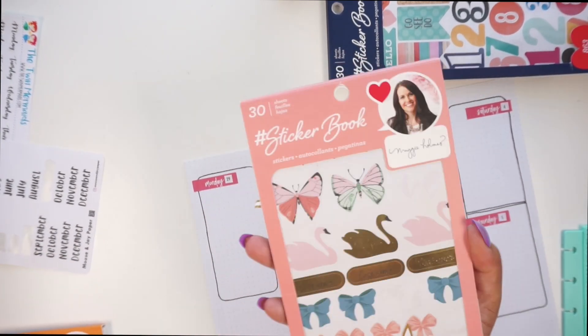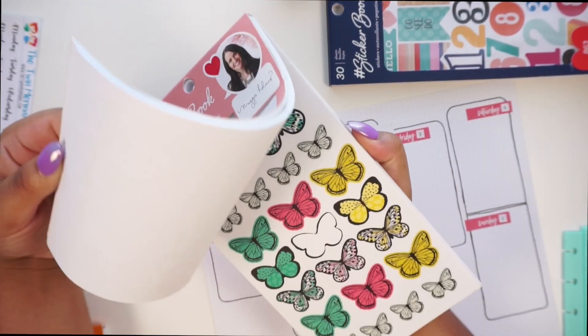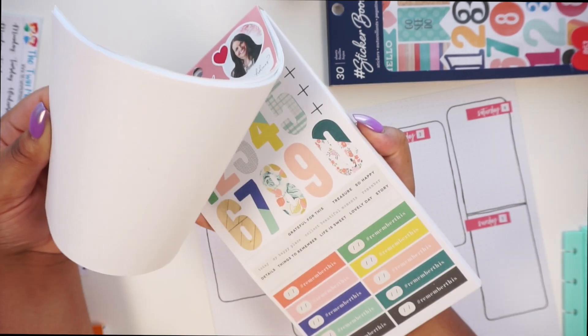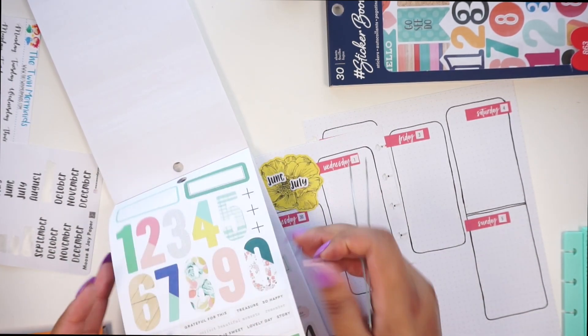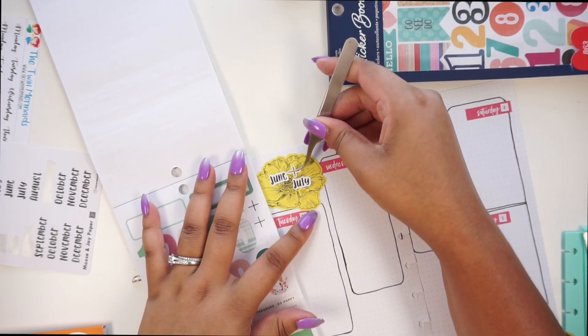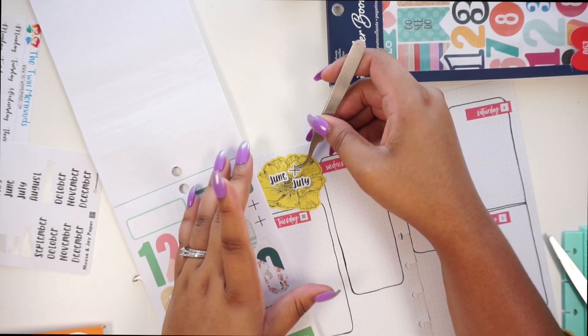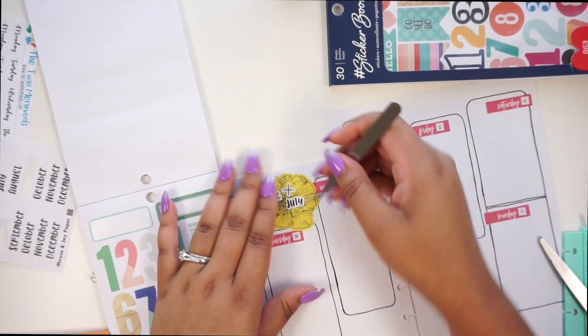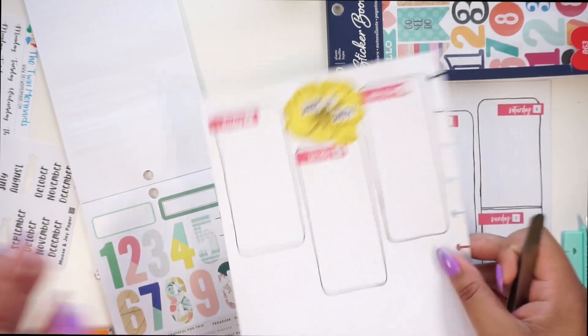I'm going to try the Maggie Holmes one. I'm pretty sure it's this one. Okay, see, she has these pluses here and I think that could be cool. So it's like June and July. So it is different. I'm going to move the July down just a bit. That looks cool to me. It's different.